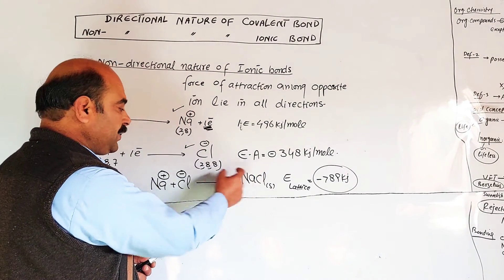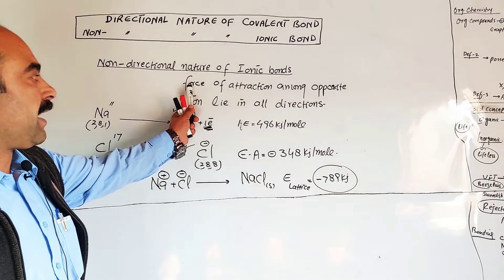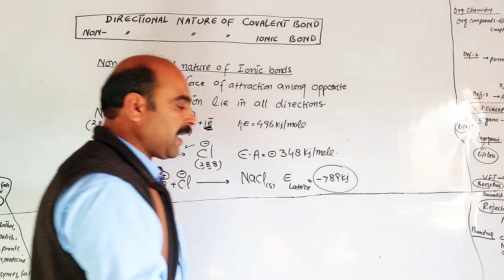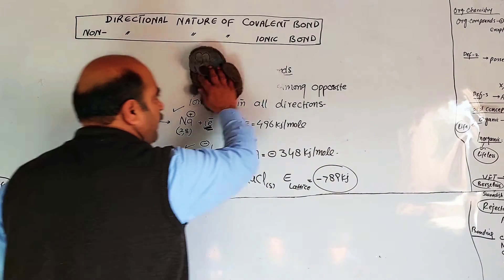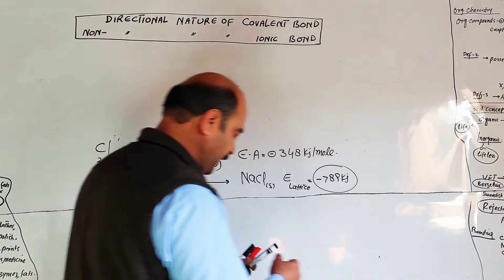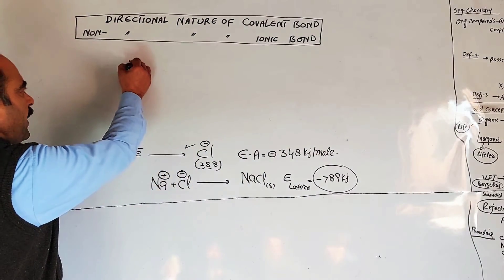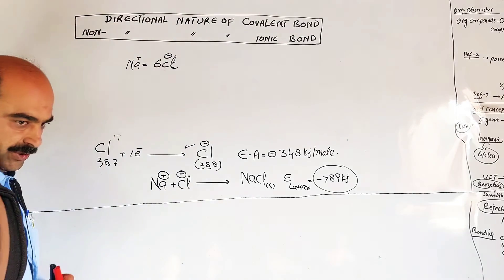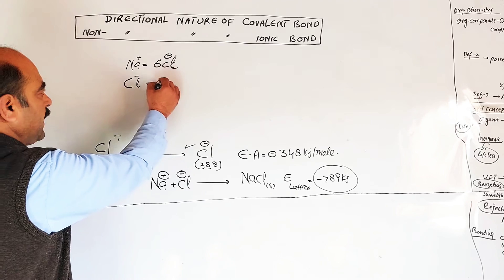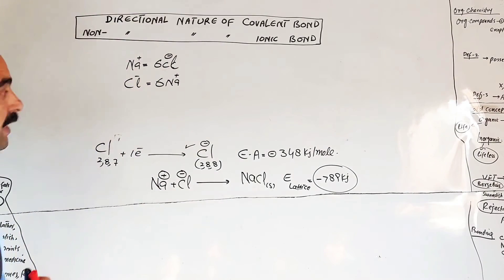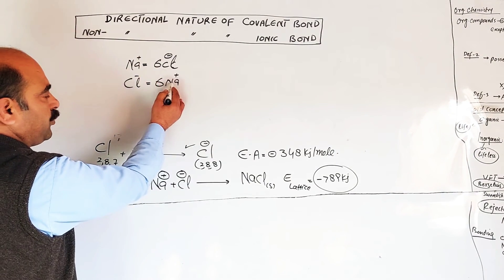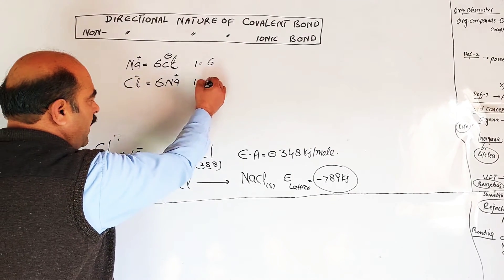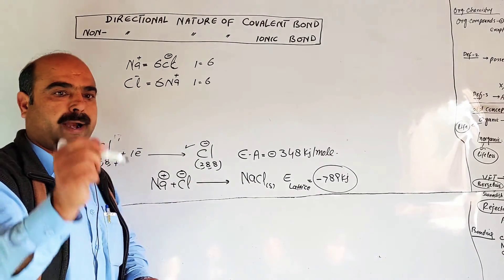This is related to the topic of attractive forces in all directions. Because the force of attraction lies in all directions, the ionic bond is non-directional. Each sodium ion is surrounded by six chloride ions, and each chloride ion is surrounded by six sodium ions — the coordination number is 6.